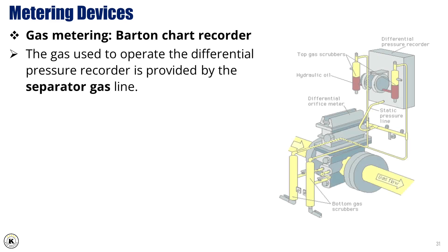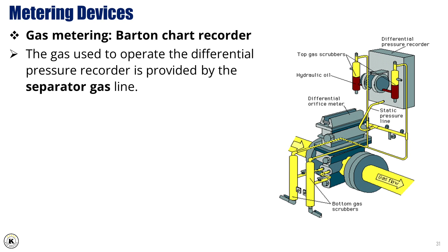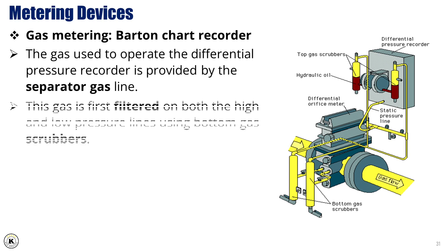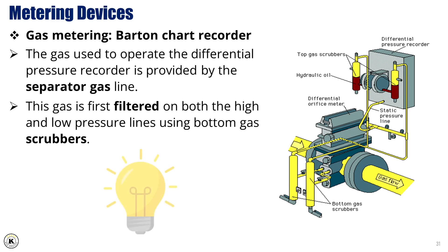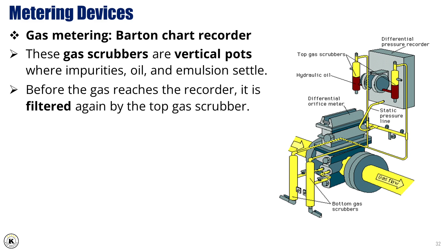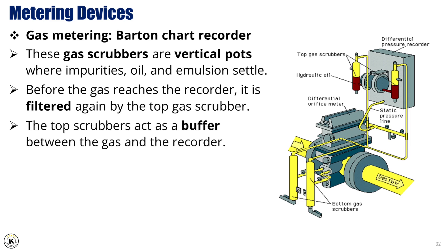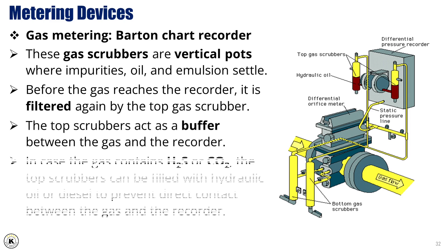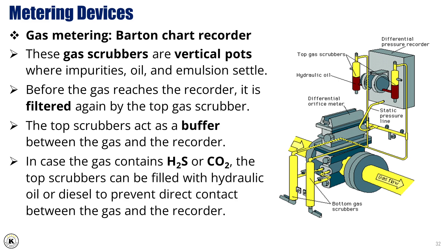The gas used to operate the differential pressure recorder is provided by the separator gas line. This gas is first filtered on both the high and low pressure lines using bottom gas scrubbers — vertical pots where impurities, oil, and emulsion settle. Before the gas reaches the recorder, it is filtered again by the top gas scrubber, which acts as a buffer between the gas and the recorder. In case the gas contains H2S or CO2, the top scrubbers can be filled with hydraulic oil or diesel to prevent direct contact between the gas and the recorder.